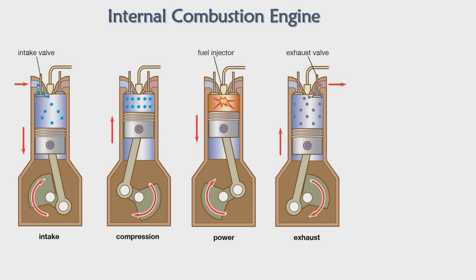Whenever we discuss any automobile — cars and so on — we classify engines into two categories: petrol engines and diesel engines. The petrol engine is known as spark ignition (SI) engine, and the diesel engine is known as compression ignition (CI) engine. In this lecture, I will talk about both spark ignition and compression ignition engines.